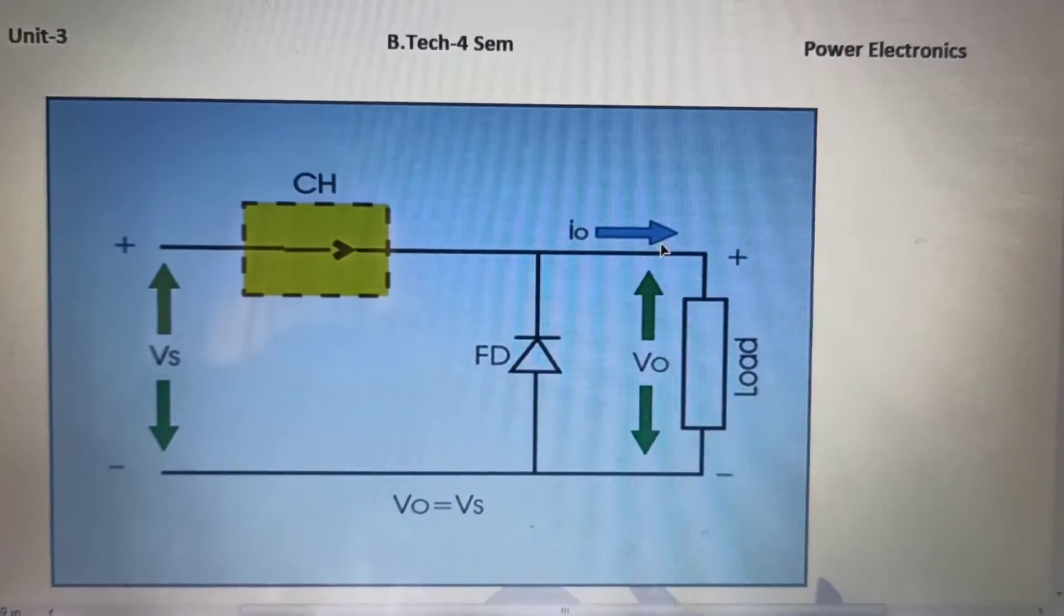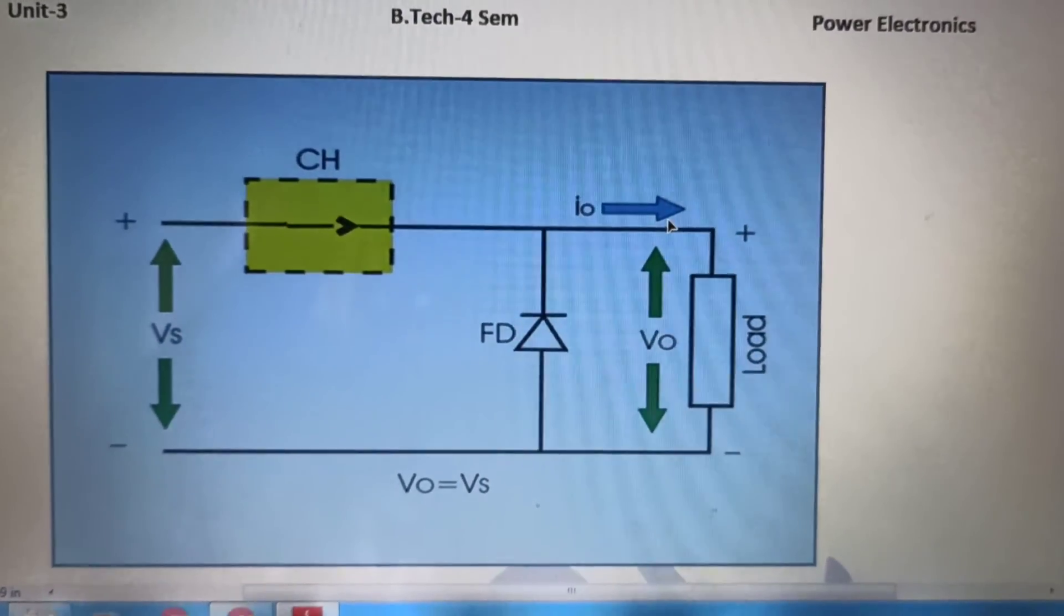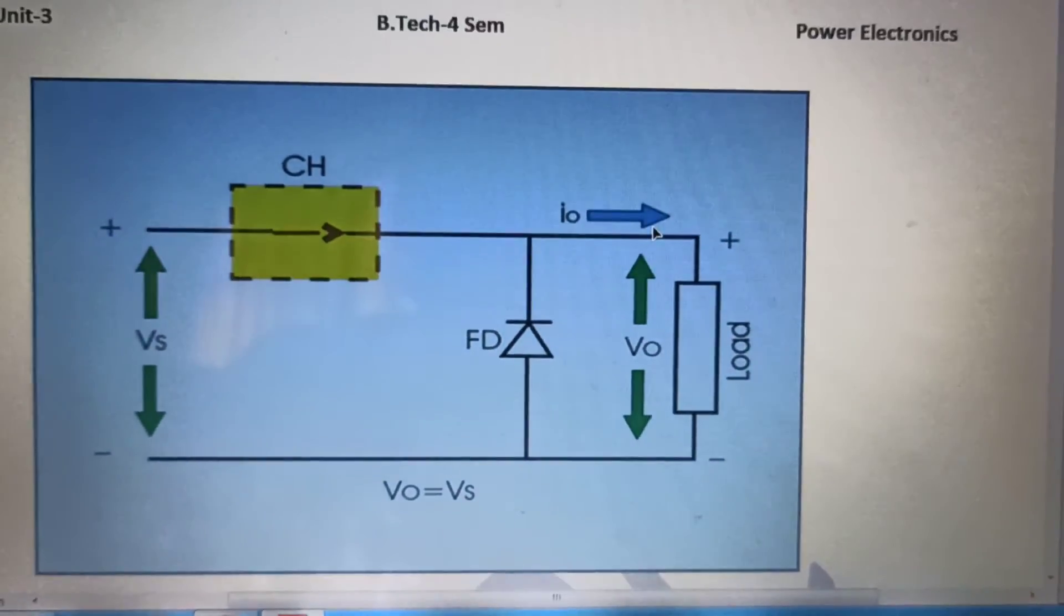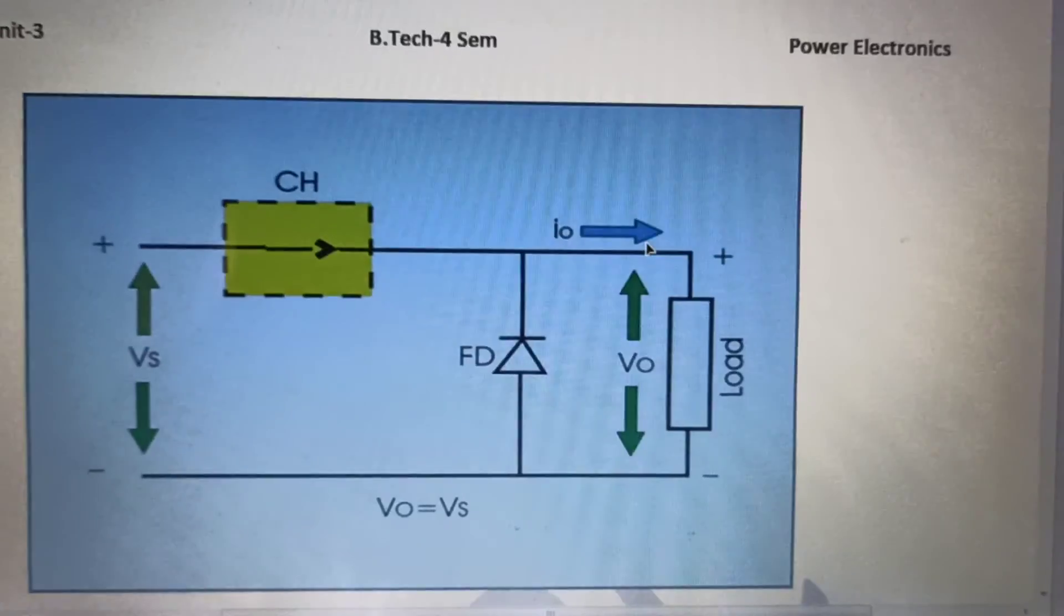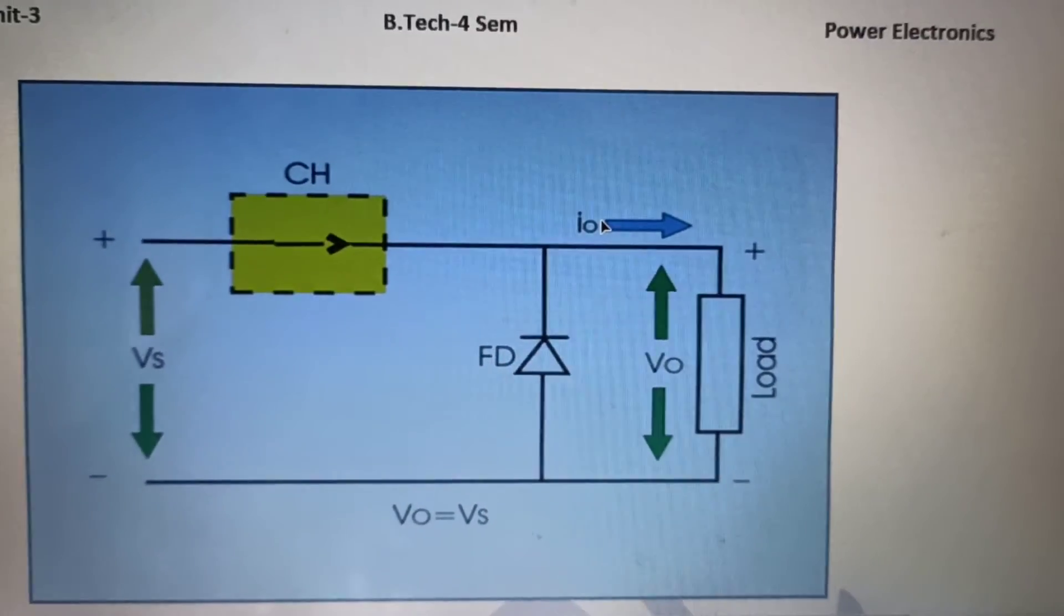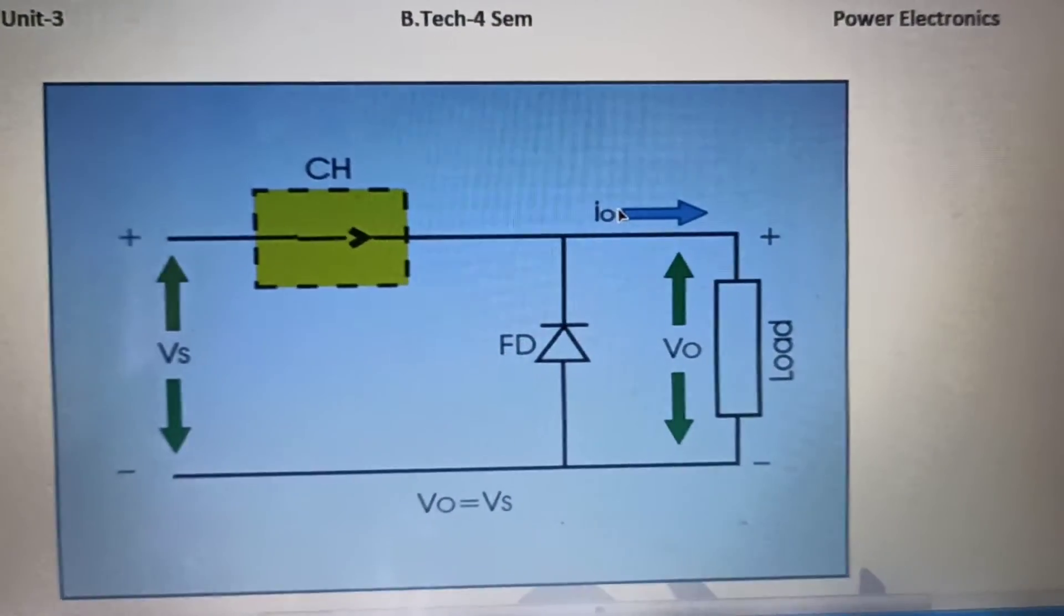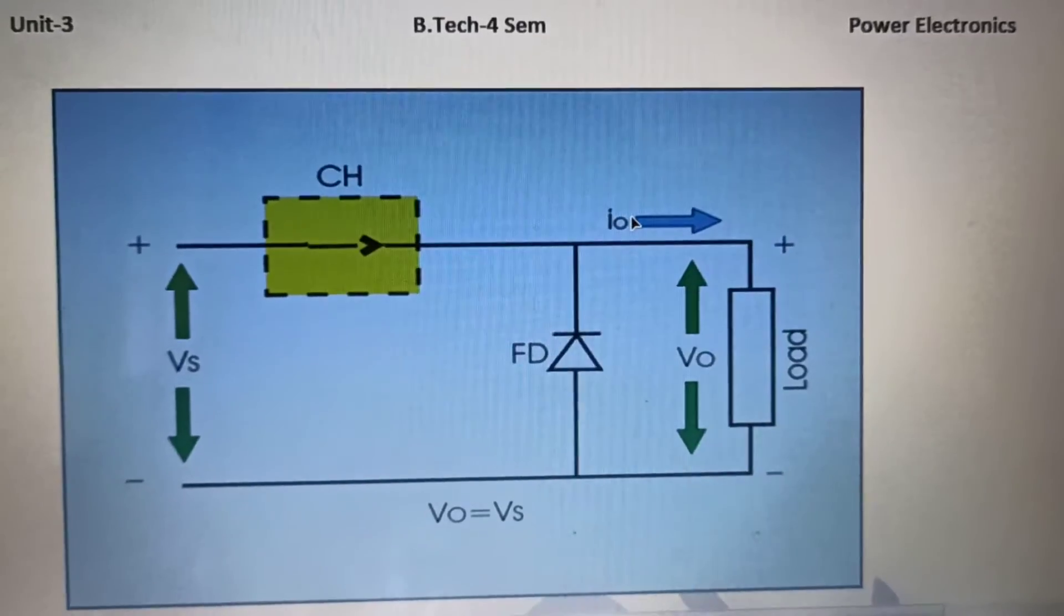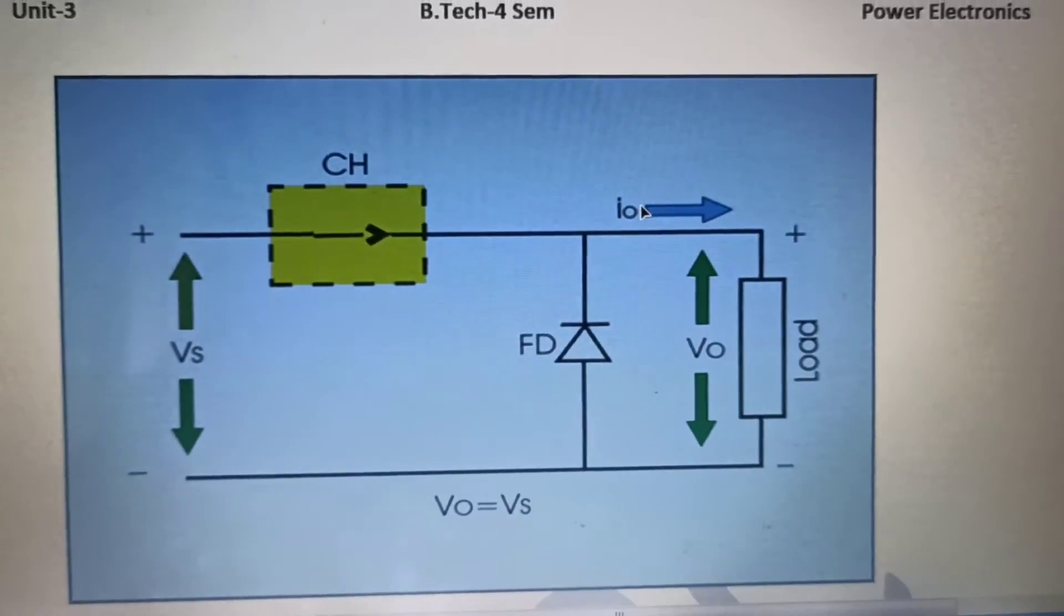So when we will apply the volt second balance, then we will get the equation. That is the voltage applied during a T_on time, that is (Vs minus V naught) into T_on plus minus V naught into T_off. So this equals to 0. And when we will equate this thing to 0, then we will get V naught equals to D*Vs.